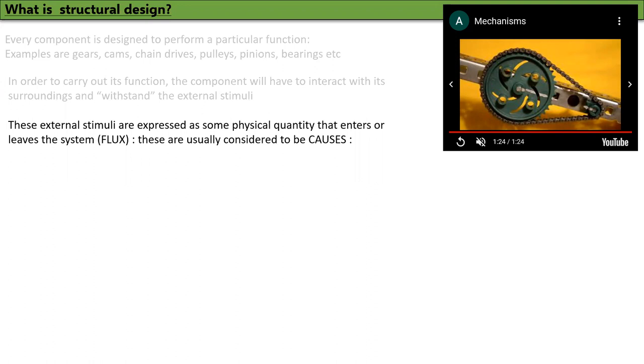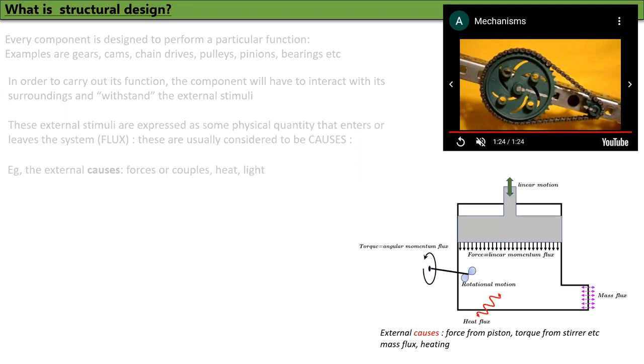Example, the external causes are forces or couples, heat, light, etc. In this system, we can see that the external causes could be the force due to the piston in the box, the torque due to the stirrer inside the chamber, the heat flux that enters or leaves the system and the mass flux that enters or leaves the system. These could be considered as causes.